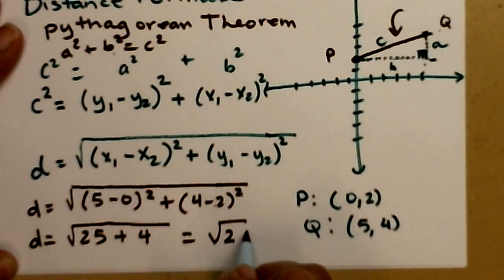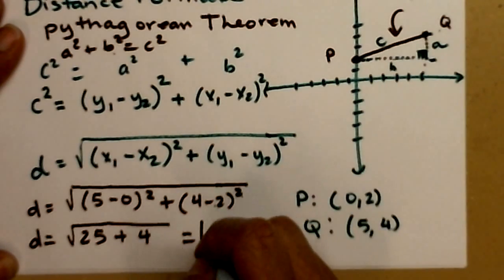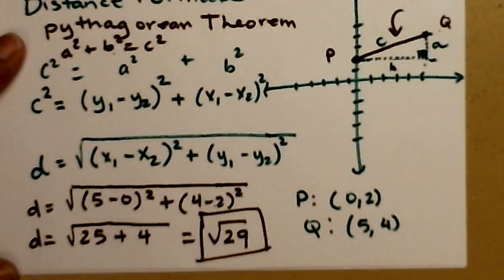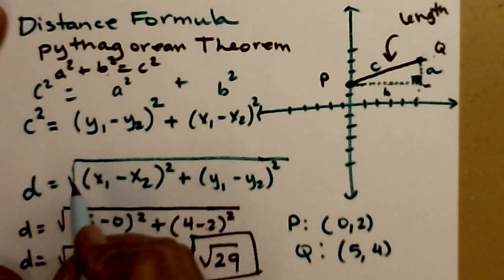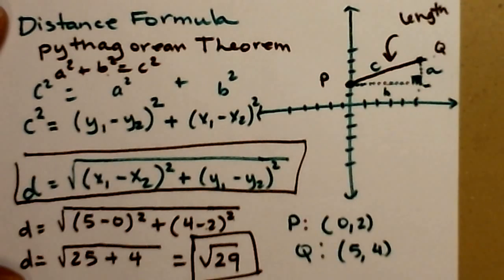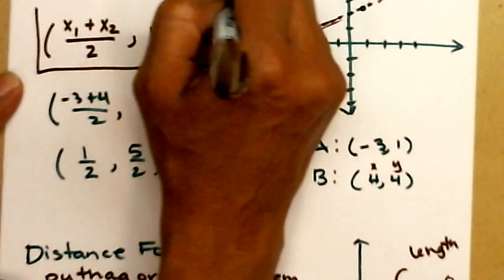So the distance, the length of that line segment, the distance between those two points is the square root of 29. So remember, your distance formula is really just the Pythagorean theorem. This is the formula, and here is the midpoint formula.